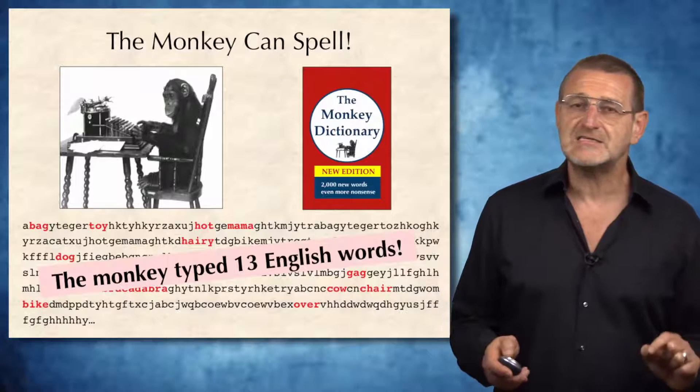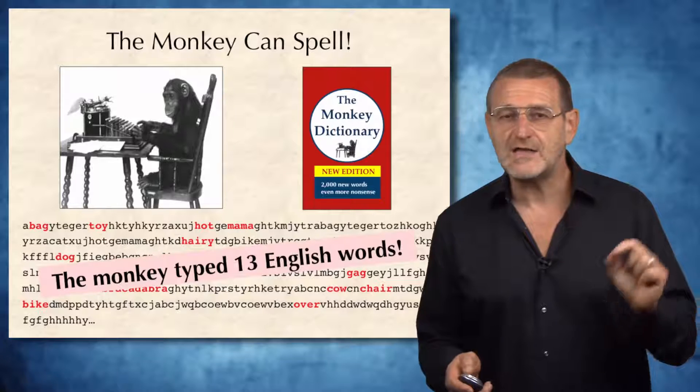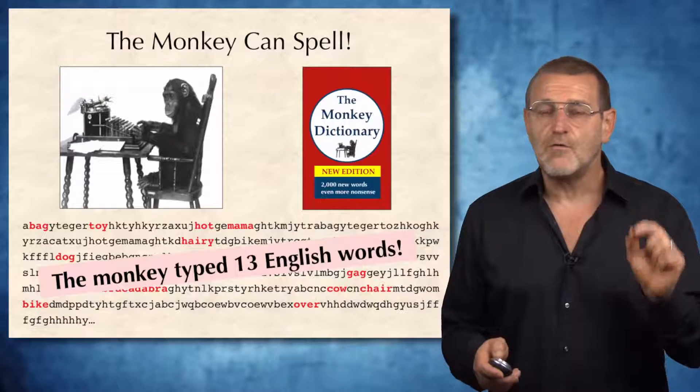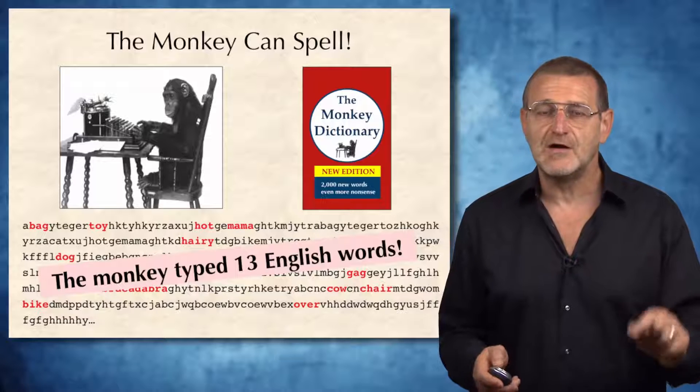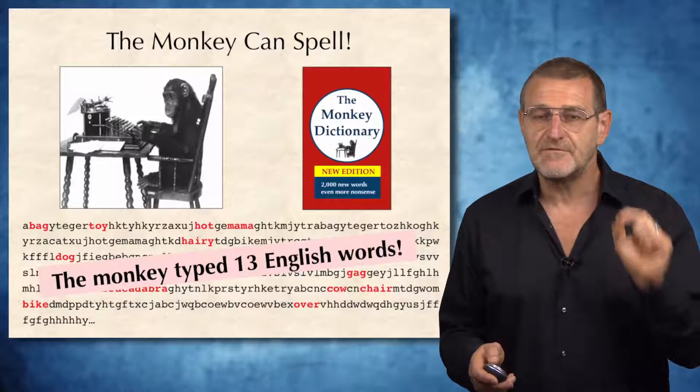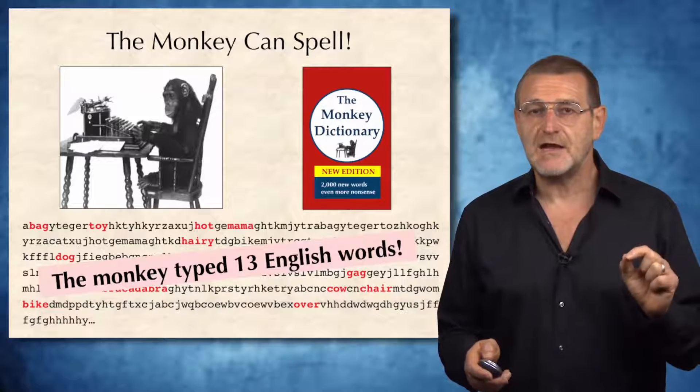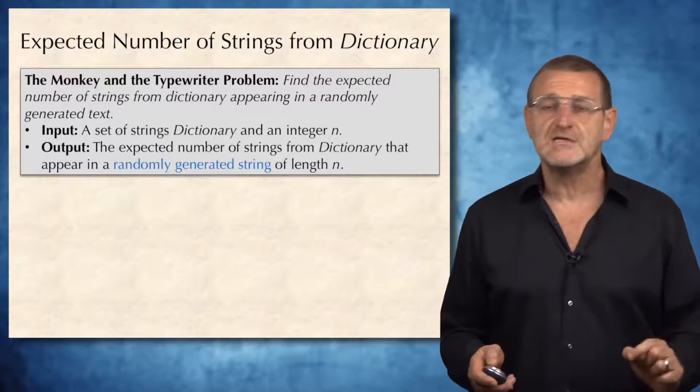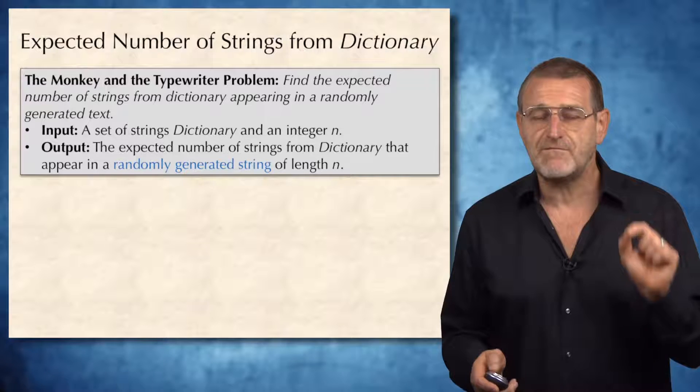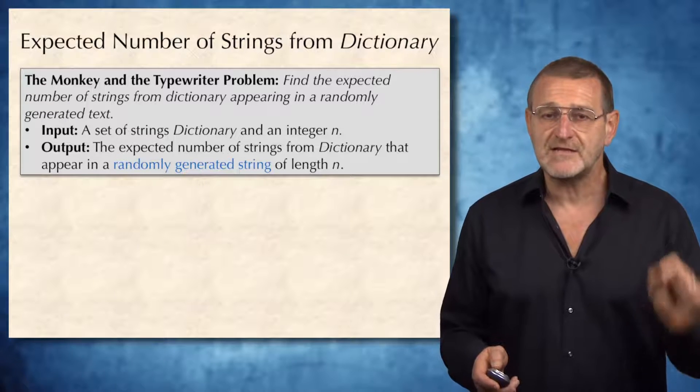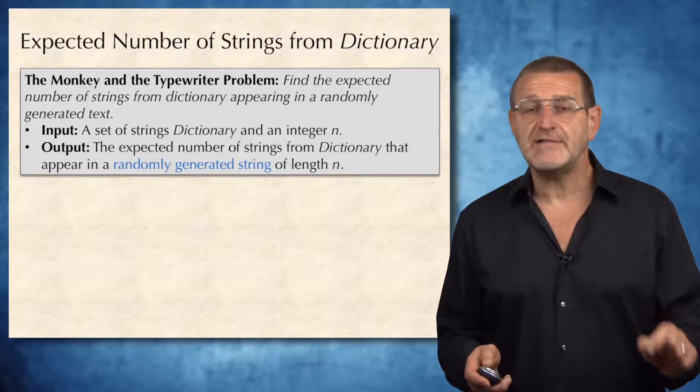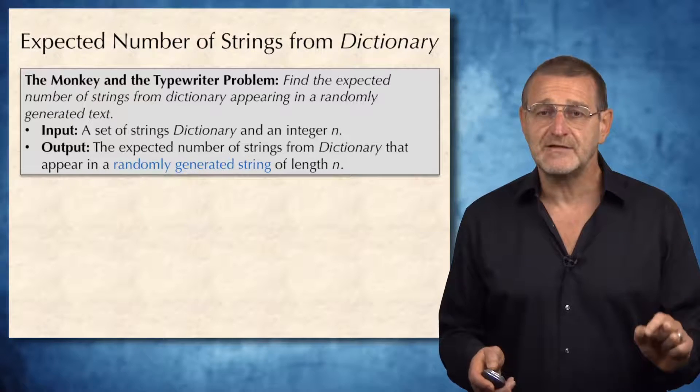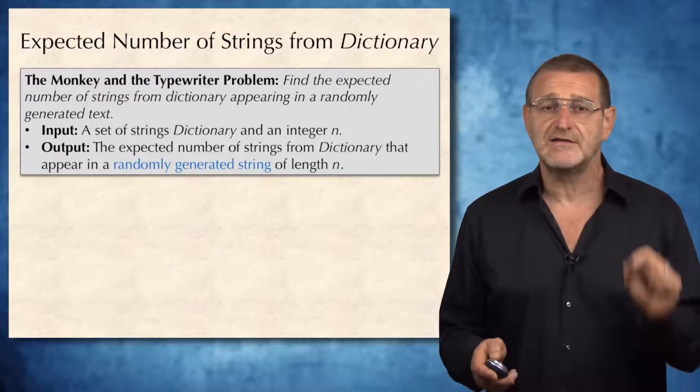Does it mean that the monkey can spell? Well, to answer this question, we probably need to evaluate what is the expected number of words from dictionary that appear in a randomly generated text. Or in other words, we need to solve the following, the monkey and the typewriter problem. Find the expected number of strings from dictionary appearing in a randomly generated text.